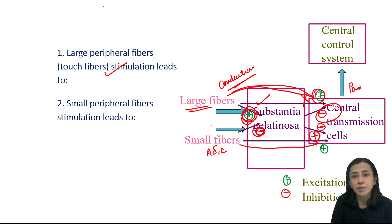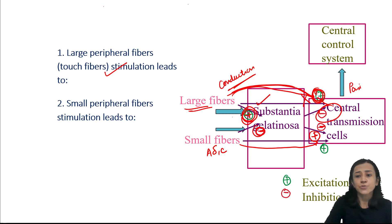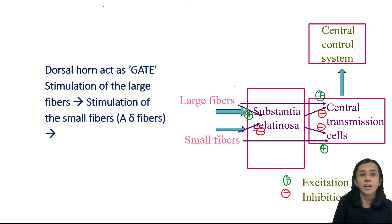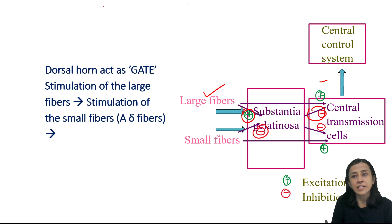When large fibers are stimulated, although they produce rapid discharge on the central transmission cell, they also stimulate substantia gelatinosa and produce a negative feedback effect. This is the gate control theory: the dorsal horn acts as a gate. When large fibers are stimulated, the gate closes; when small fibers are stimulated, the gate opens.